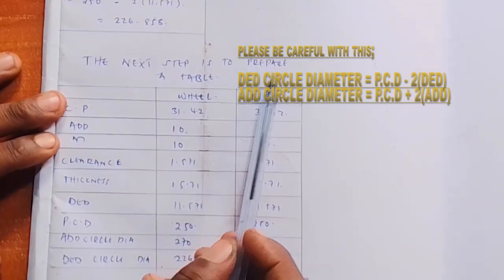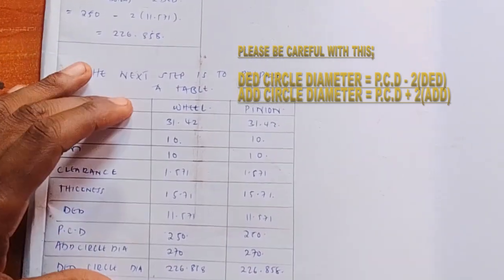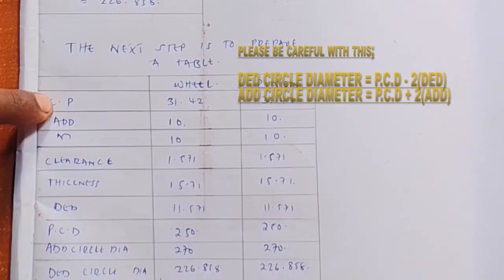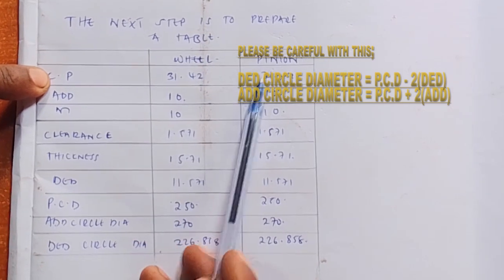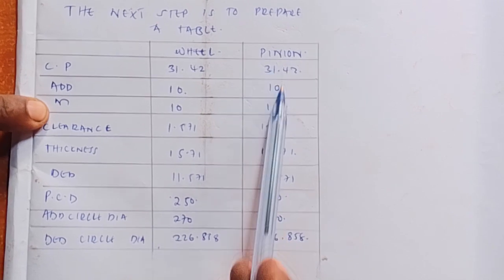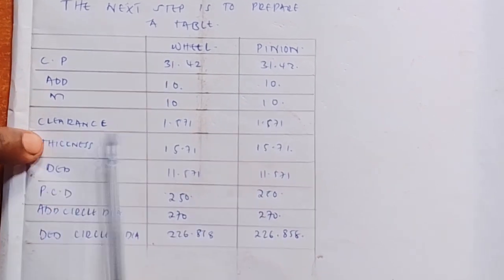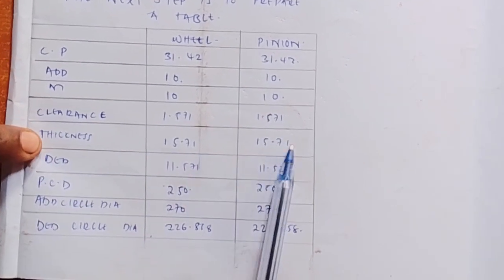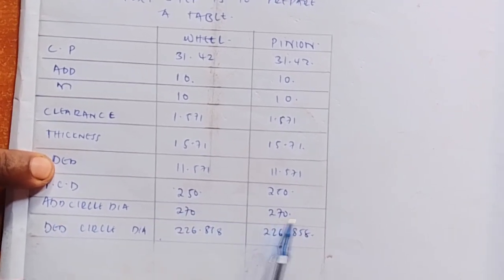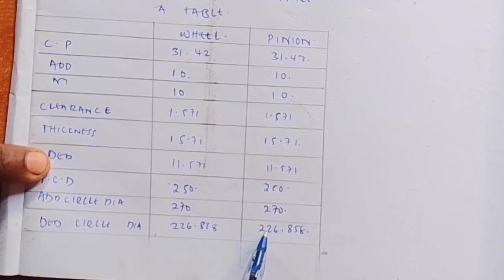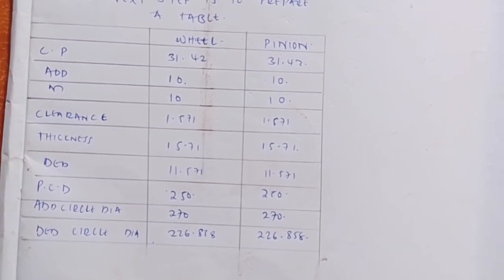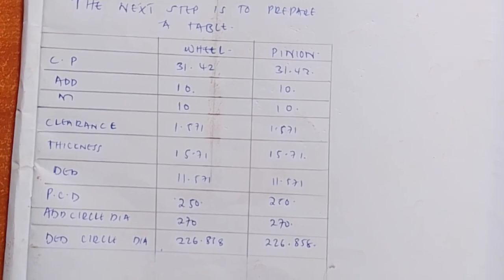After that, you prepare a table and fill in all the information you have calculated: the CP, addendum, module, clearance, thickness, dedendum, PCD, addendum circle diameter, and dedendum circle diameter for both the wheel and the pinion — all of which are the same in this case because the ratio was 1 to 1. Please subscribe; in the next video I will show you how to mesh.